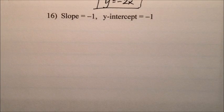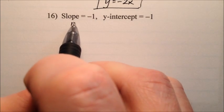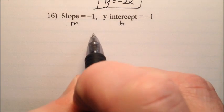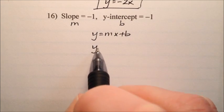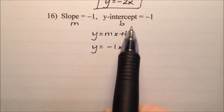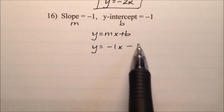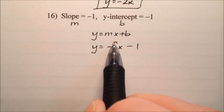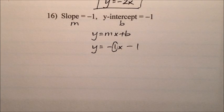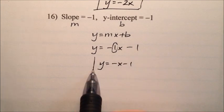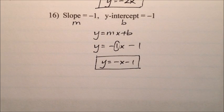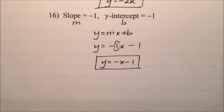The last problem is number 16. The slope is negative 1 and the y-intercept is negative 1, so m = -1 and b = -1. Using y = mx + b, we get y = -1x - 1. We don't like to write the coefficient 1 when it's a slope, so we simplify to y = -x - 1. That's the slope-intercept form for number 16: y = -x - 1.